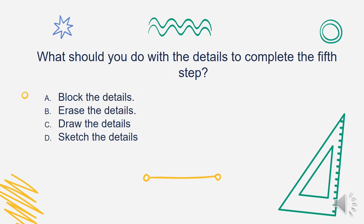What should you do with the details to complete the fifth step? Is it A. Block the details, B. Erase the details, C. Draw the details, or D. Sketch the details? The answer is Letter C. Draw the details.